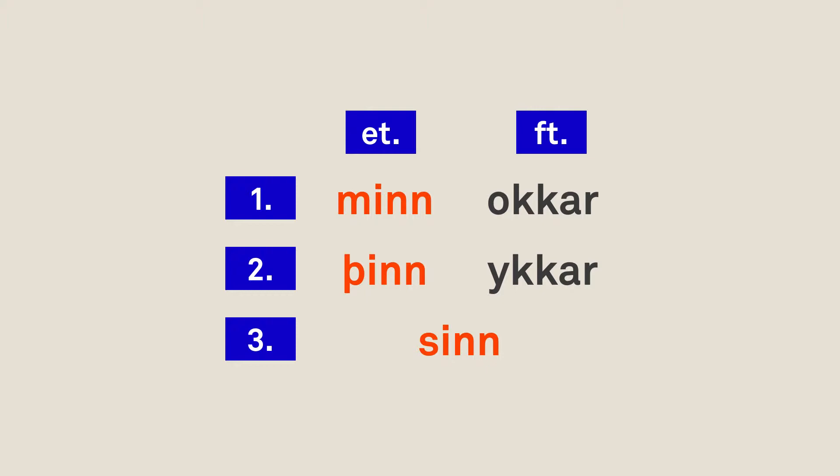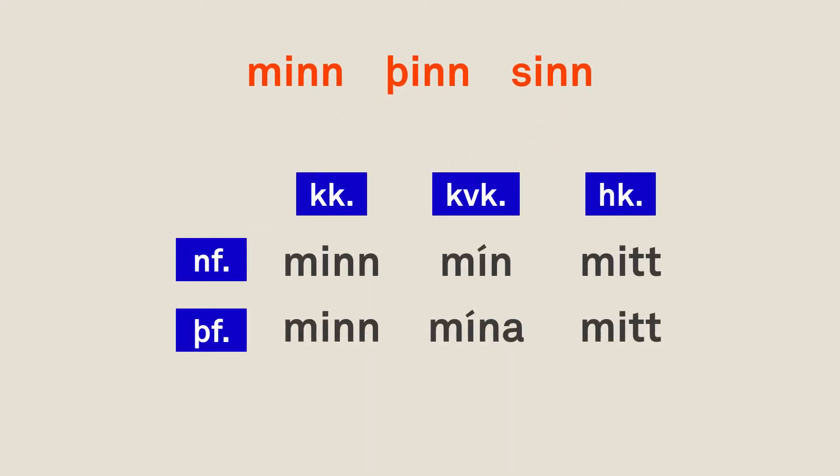Let's have a look at the forms of these three possessive adjectives. We have them in the nominative and accusative case in the masculine, feminine, and neuter. Taking the first one, 'mín', we see that it changes to 'mín' in the accusative masculine. In the feminine nominative it's 'mín', accusative 'mína', and then in the neuter we have 'mitt' for both cases.